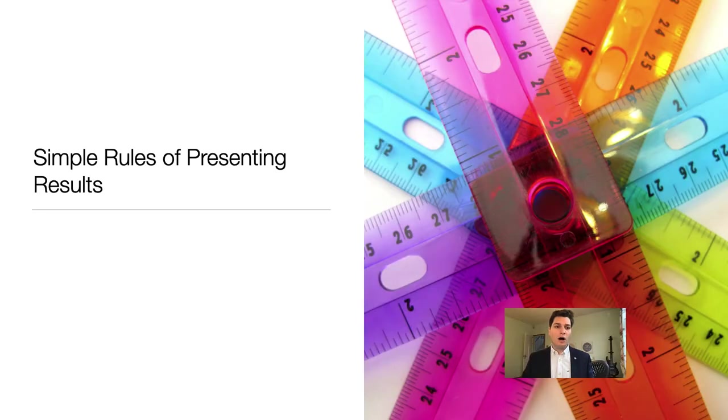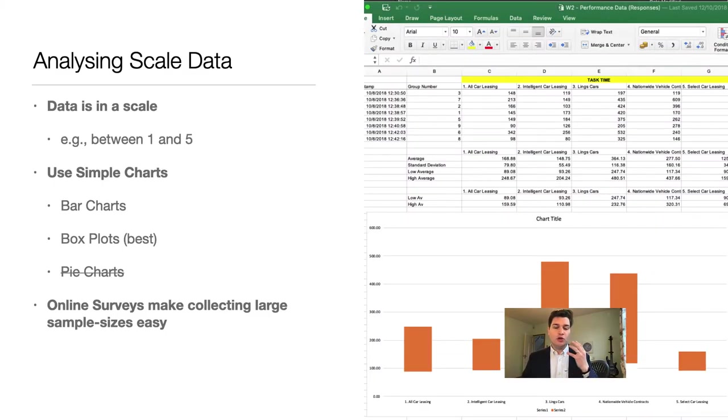So what are the rules? You need to analyze scale data which is between one and five normally. Maybe you're going to be doing task time or frequencies but you're doing these in simple ways and a picture is the best way to do this. So a bar chart or a box plot is the best way. Pie charts really are not very good because they lie to you all the time. People find it very difficult to compare by pie charts.